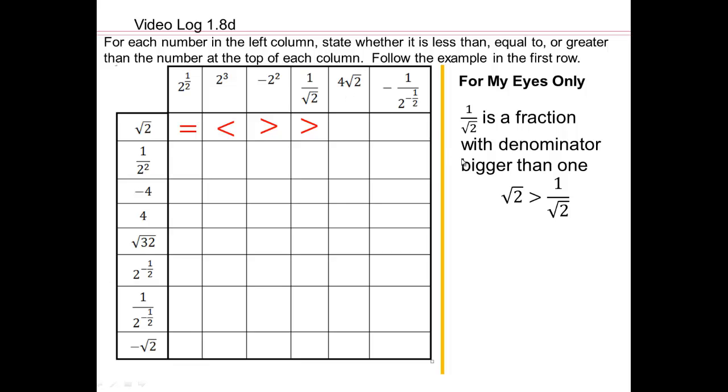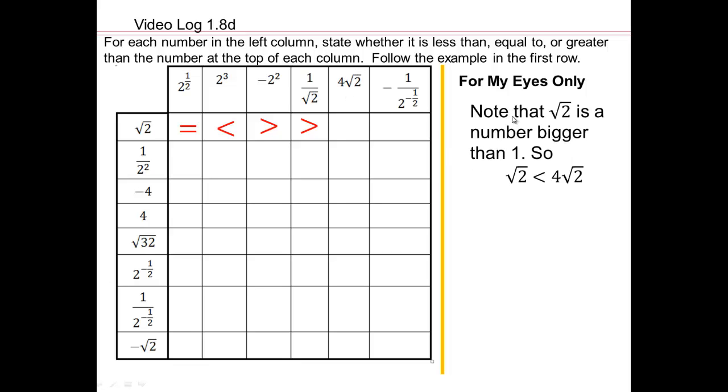How about this? Well, square root 2, which means the same as 4 times square root 2. That's what this means. So square root 2 is 1 point something. Right? It's a number bigger than 1. And so that would mean 4 times a number bigger than 1 is going to be more than 4. So clearly, square root 2 is smaller than 4 square root 2.